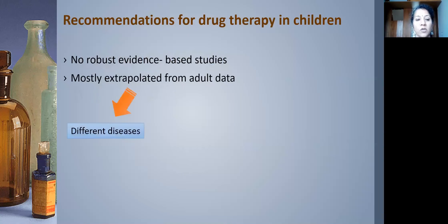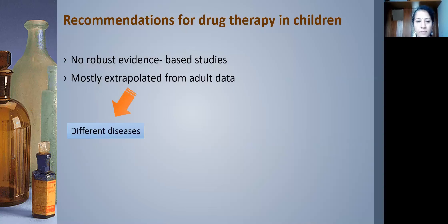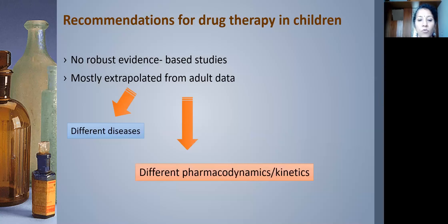In most instances our diseases are different. While others deal with ischemic cardiomyopathy and ischemic heart failure, we have congenital heart diseases, a systemic right ventricle, and genetic diseases that are very different. The other problem is that children have different pharmacodynamics and kinetics where drug metabolism is concerned.